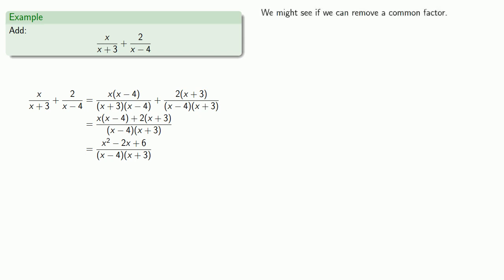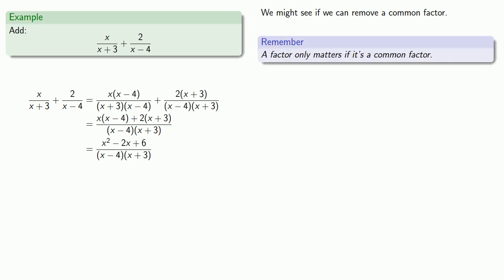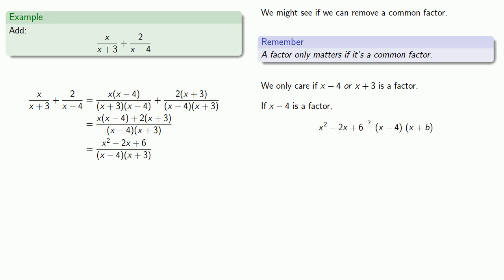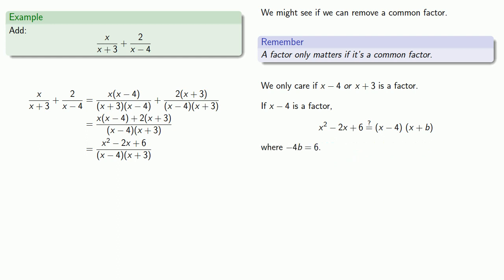So we might see if we can remove a common factor. But remember, a factor only matters if it's a common factor, which means we only care if x minus 4 or x plus 3 is a factor. So we might see if x minus 4 is a factor of the numerator — if we can write x squared minus 2x plus 6 as x minus 4 times something. But this would require minus 4b to be 6, which has no integer solutions, so we can't get a factorization this way.